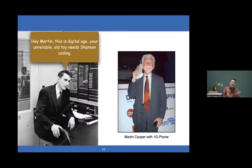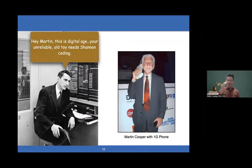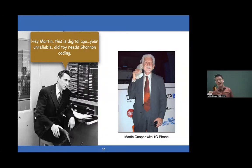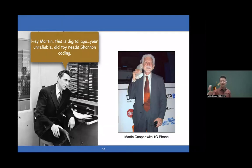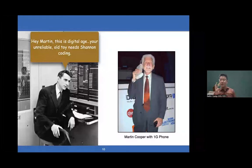I'm going to ask some controversial questions and suggest possible answers. Let's look at 1G. The representative figure is Martin Cooper. He invented the 1G phone, which was very big because it's based on analog technologies—uncoded amplitude modulation or frequency shift keying. Shannon probably would say something like, 'Hey Martin, this is a digital age. Your unreliable old toy is Shannon coding.'